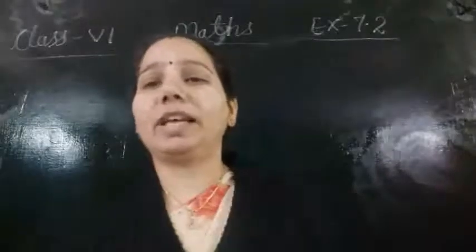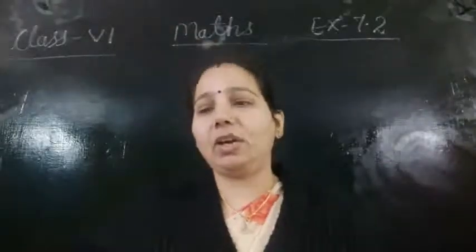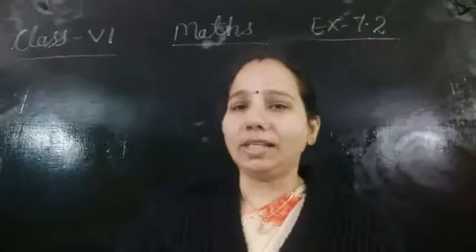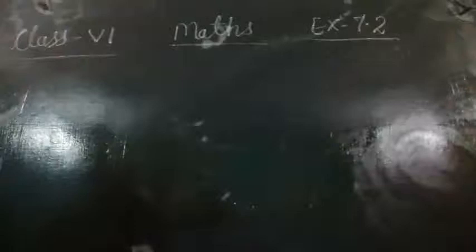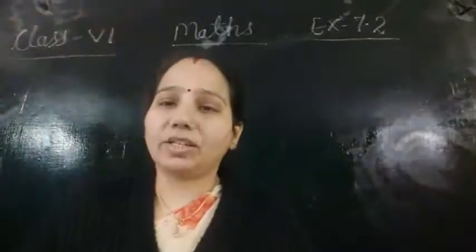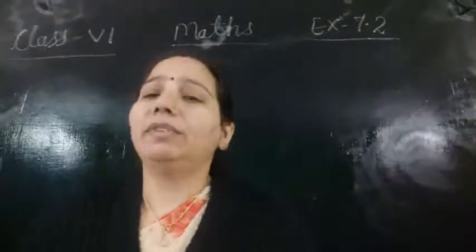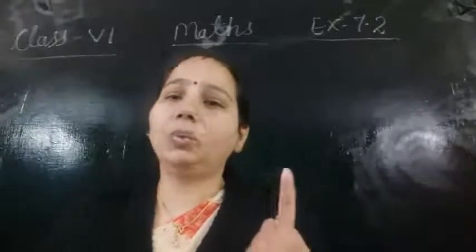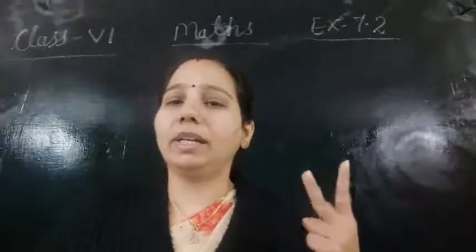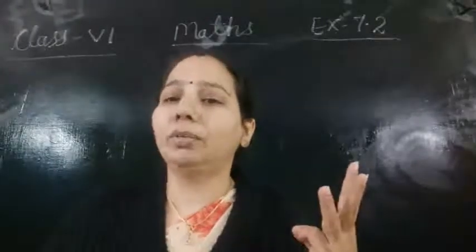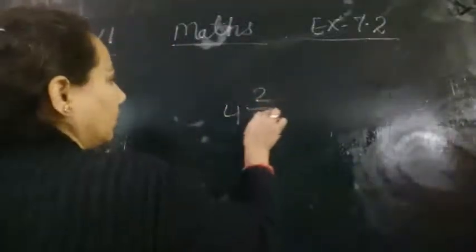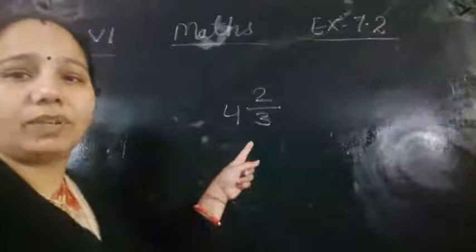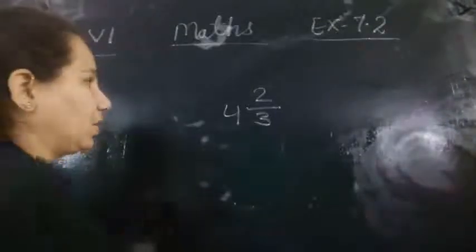What is mixed fraction? What is proper? What is improper? We will start with exercise 7.2. Mixed fraction means a fraction that includes one whole number, a denominator, and a numerator. For example, 4 and 2/3 — this is called a mixed fraction. Also, 1 and 4/5 — this is also called a mixed fraction.